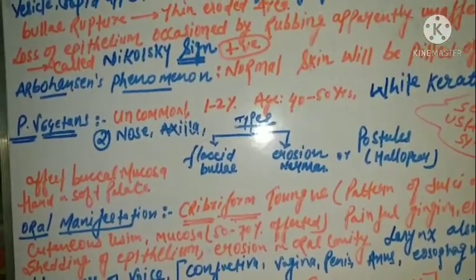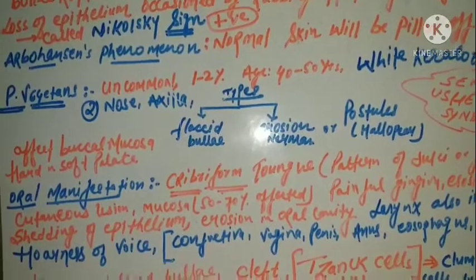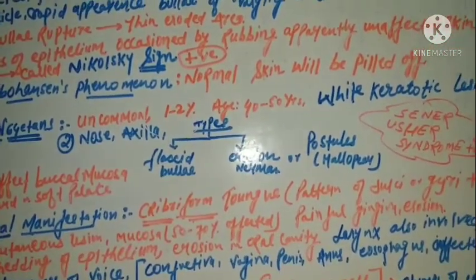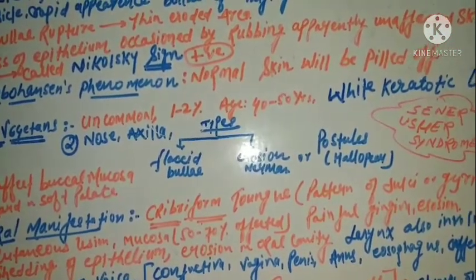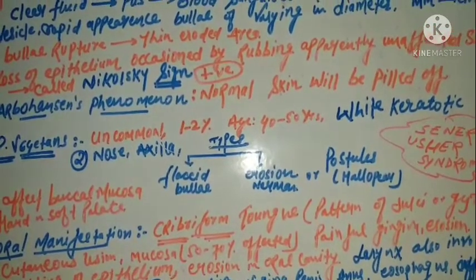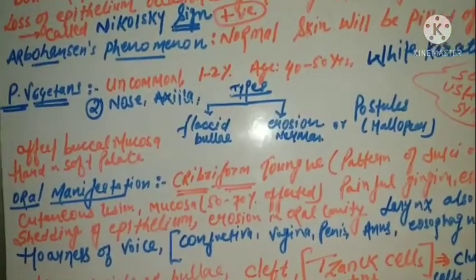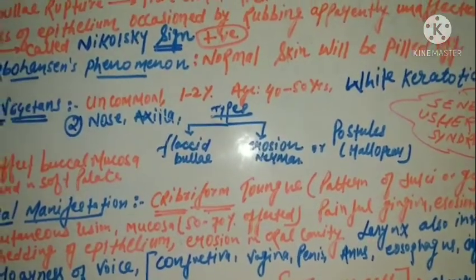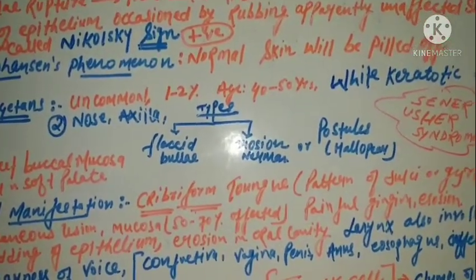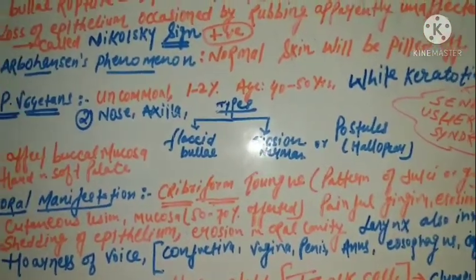The cutaneous lesions involve mucous membranes — approximately 50 to 70 percent of cases show mucosal involvement. There will be painful erosions over the gingiva with ill-defined irregular borders and shedding of epithelium. Since cell-to-cell junction is lost, there is erosion in the oral cavity. Other areas affected include the larynx — causing hoarseness of voice — as well as the conjunctiva, vagina, penis, anus, and esophagus.